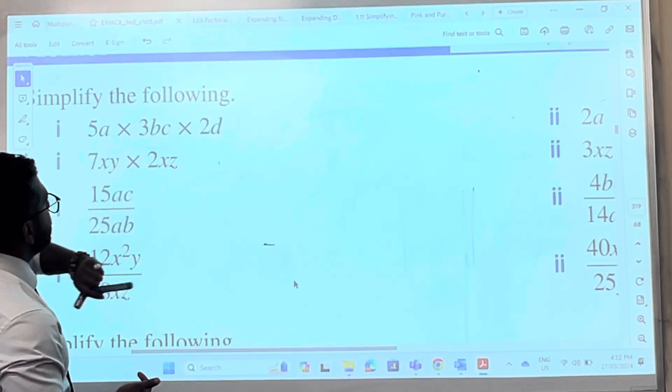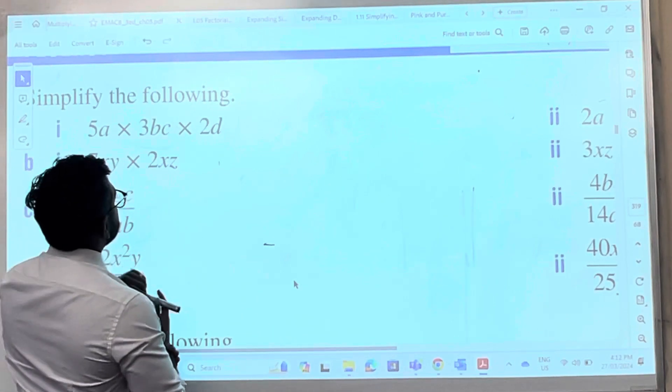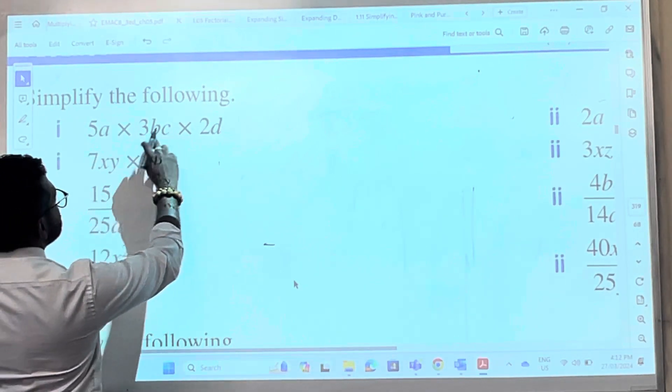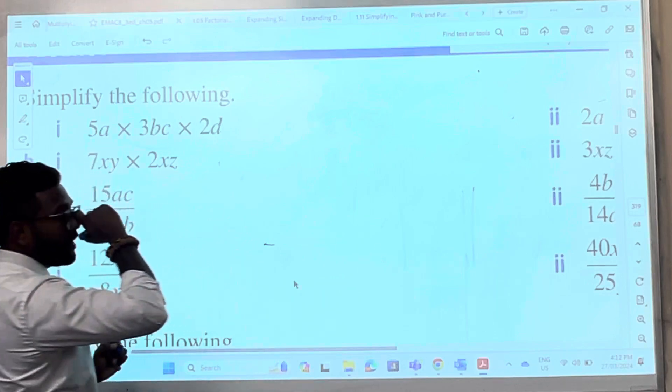So in this scenario we've got 2d times 3bc times 5a. So what you're going to do is, what I'll do is multiply the smaller numbers if you're doing this by hand.